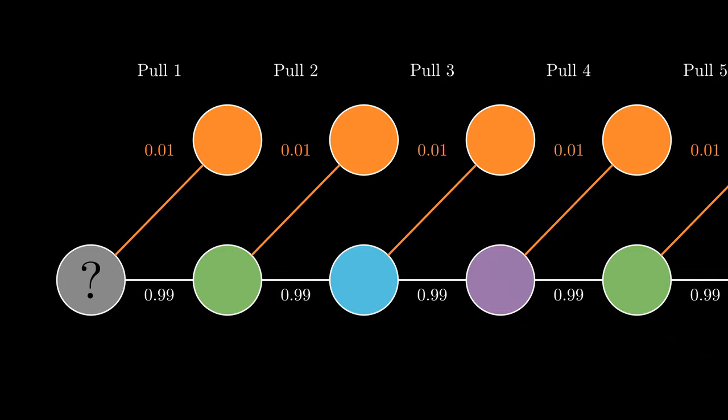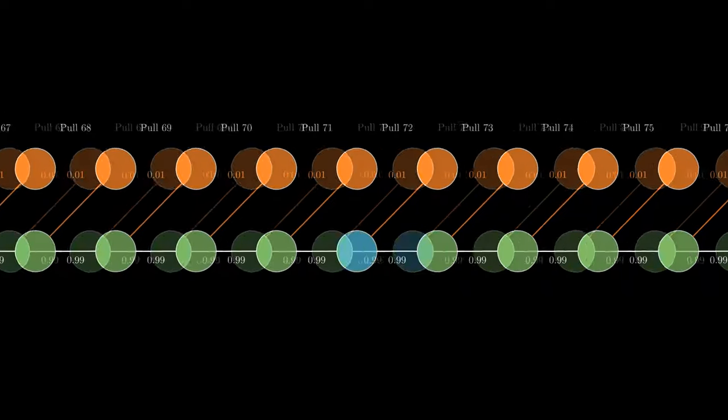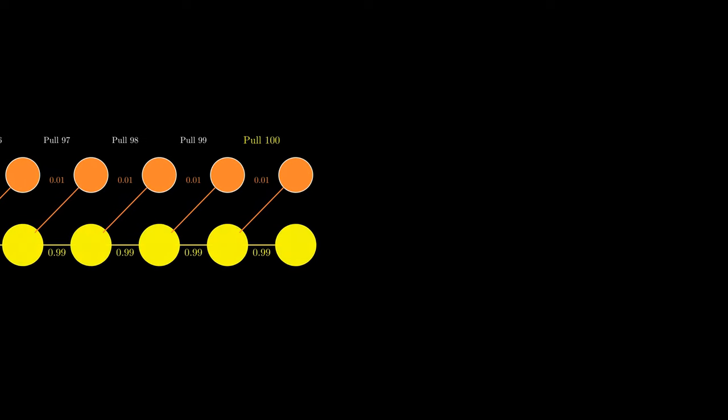Notice that there is only one branch we haven't calculated, which also happens to be the only way in which we can fail in pulling a legendary at all. The probability of this happening is 99% to the power of 100. This is called the complement because it is like the missing part of the complete problem.